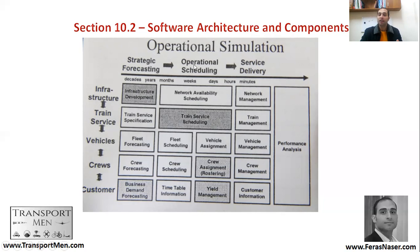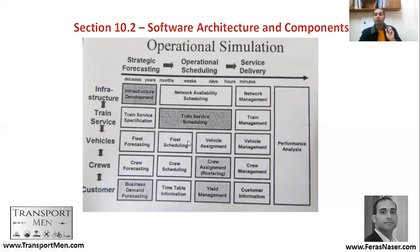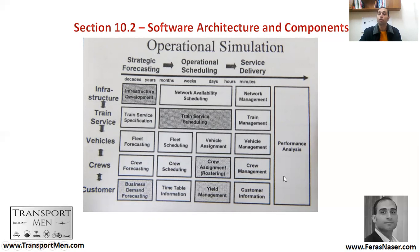At the operational scheduling level, you look at network availability to fit your timetable, then assign fleet scheduling, vehicle assignment, crew scheduling, and crew assignment based on that availability. It is not just about having a train every 10 minutes; you assign a specific vehicle, a specific driver, and a specific time. You then develop the timetable with expectations about yield based on customer expectations, and manage the network, vehicles, crew, and customers until you reach your performance targets.